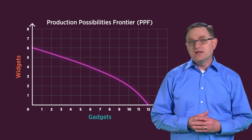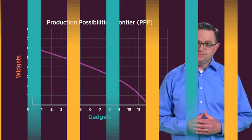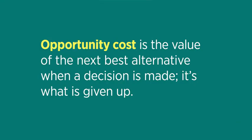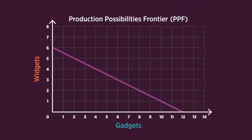This curved line illustrates our fifth and final lesson: Lesson 5 – The Law of Increasing Opportunity Cost. As you increase the production of one good, the opportunity cost to produce the additional good will increase. Remember that opportunity cost is the value of the next best alternative when a decision is made — it's what is given up. Let's compare straight and curved frontier lines to better understand what is more likely to happen when production changes.